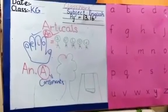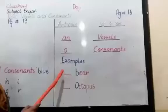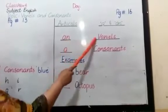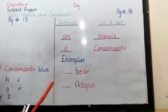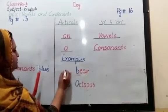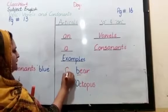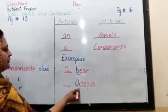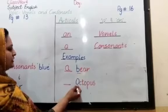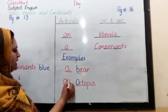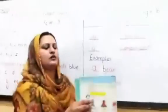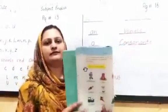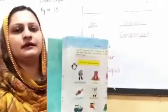Now, dear students, look at page 16. AN is used with vowels and A is used with consonants. For example, B is starting with the letter B, so we write A before it. And in 'octopus', the word starts with the letter O, so we write AN. I hope you have understood about articles. Now do it by yourself.